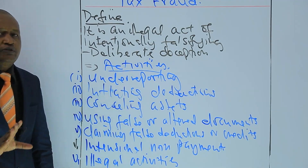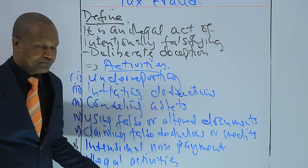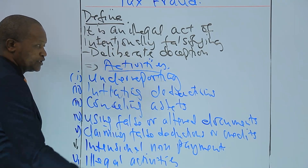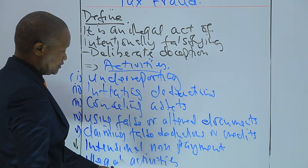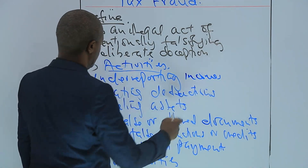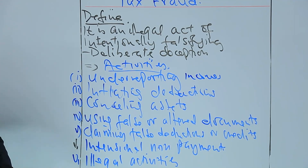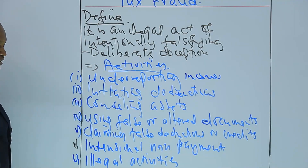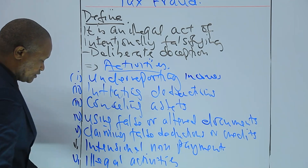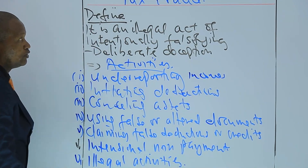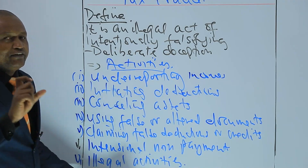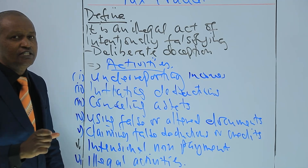So tax fraud can be defined by giving the activities that surround it. These include: one, underreporting income; two, inflating deductions; three, concealing assets; four, using false or altered documents; five, claiming false deductions or credits; six, intentional non-payment; and seven, engaging in illegal activities. It is important to note that tax fraud is a serious criminal offense that can result in heavy fines, penalties, and even imprisonment.